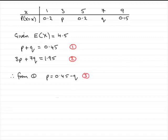Now we substitute equation 3 into equation 2. This gives me 3 times p, where p is 0.45 minus q, plus 7q, which equals 1.95.